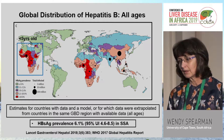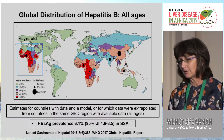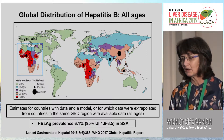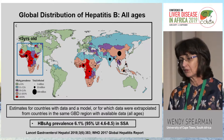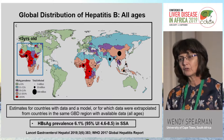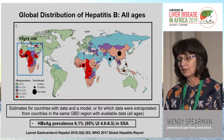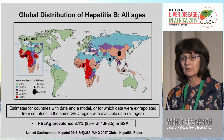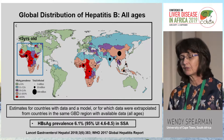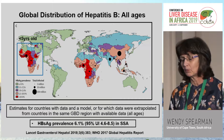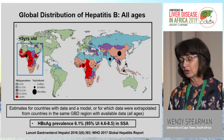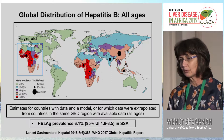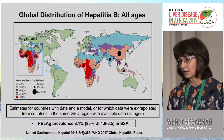Moving on to hepatitis B — the big one. Looking at this map, we see how problematic it is in Africa, with over 10% seroprevalence shown in red. In the inset map showing under-five-year-olds, it really mirrors the prevalence in all ages. It's critical that we look at maternal-to-child transmission and early childhood acquisition under the age of five. The prevalence in sub-Saharan Africa, according to WHO, is about 6.1%.